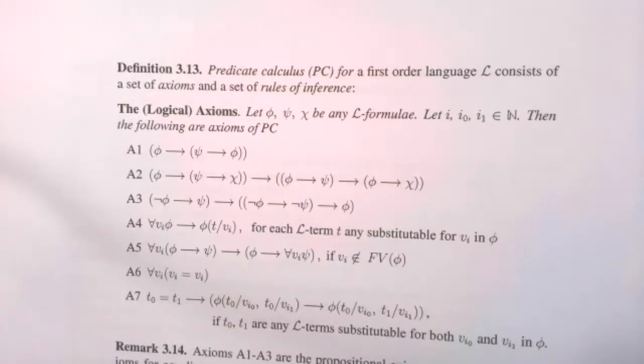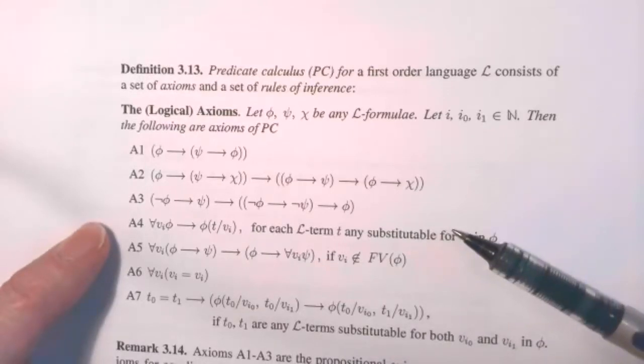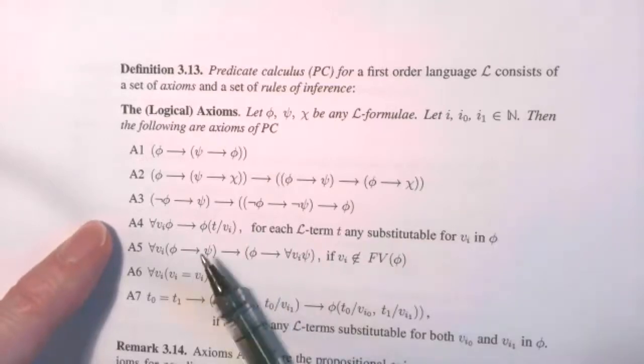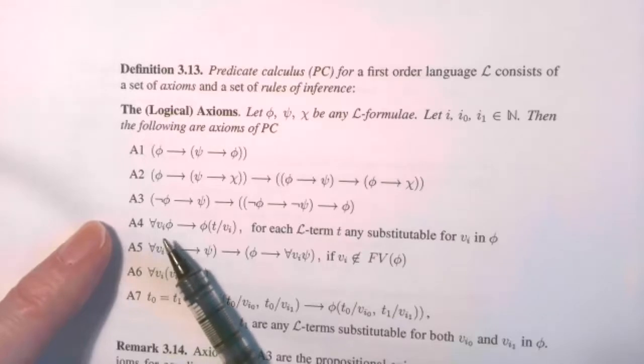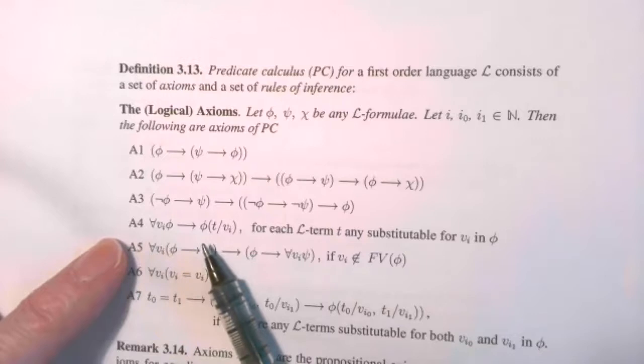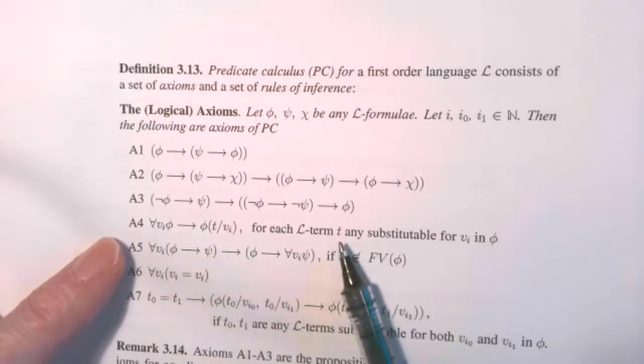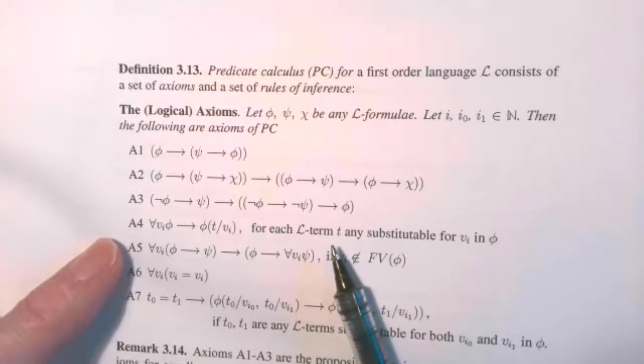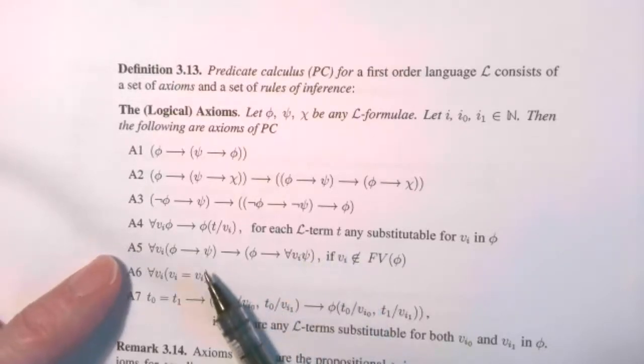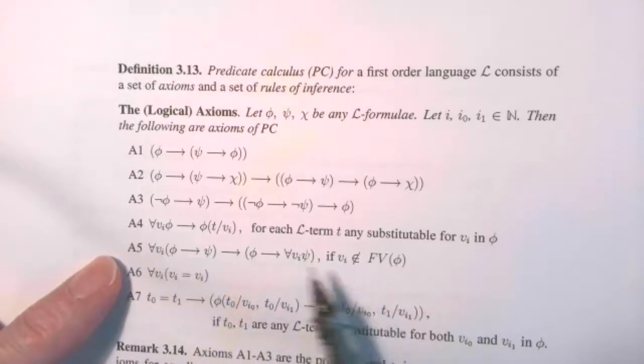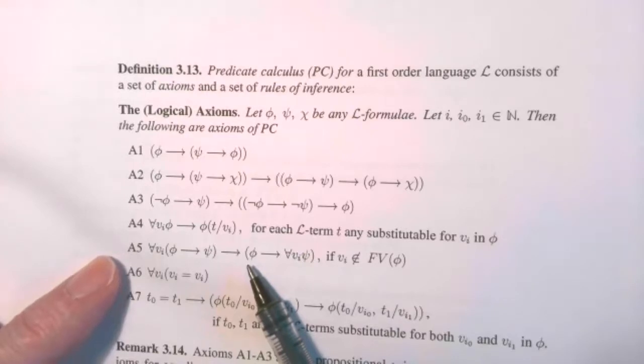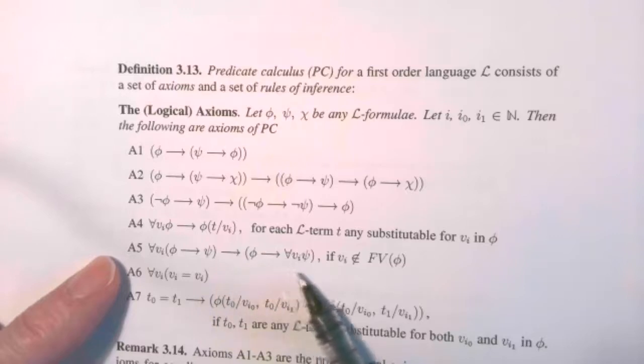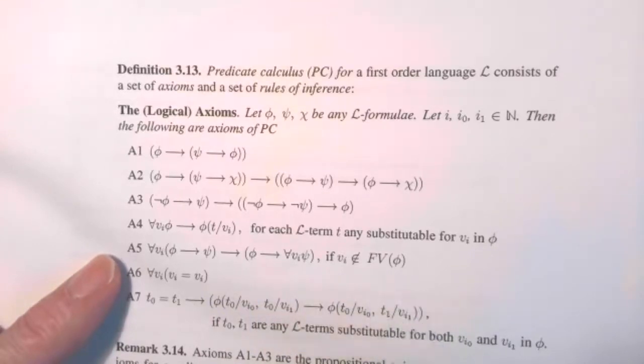To draw the truth table out for this, you'll get all t's in the final column. Likewise for A2, this is also an instance of a tautology. Just put p, q and r for phi, psi and chi and draw a truth table for it. A3 is a tautology as well. So those axioms don't say anything about quantifiers. The next group, A4, A5, A6 are more peculiar to first-order languages. Here I've got a quantified formula, for all vi phi. This arrow implies phi where I substitute t for vi, and I make sure I only use legitimate t's in the substitution.